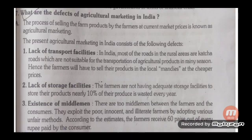Next topic: Defects of Agriculture Marketing in India. Agriculture marketing is the process by which farmers sell their goods — it is the process of selling farm products at current market prices. The present agriculture marketing system in India consists of the following defects.